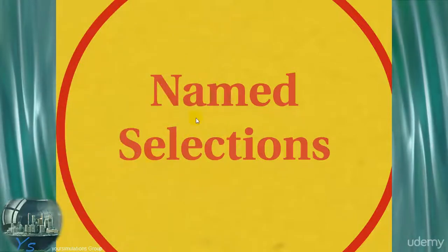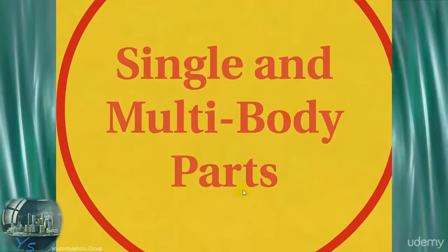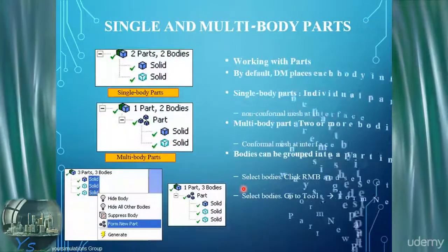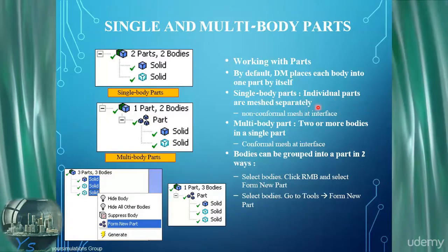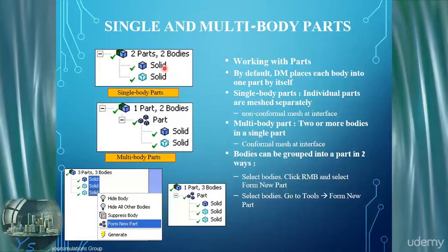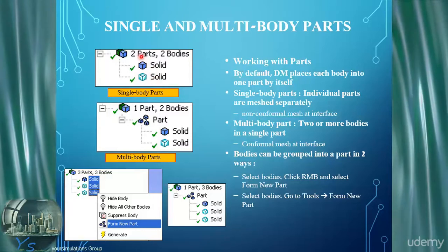An important concept is that of single and multi-body parts within Design Modeler. By default, Design Modeler places each body into one part by itself. With single body parts, we have individual parts that mesh separately. The example on the top right shows two parts and two bodies — two solids, one unfrozen and one frozen — each in separate parts, meaning neither solid sees the other.